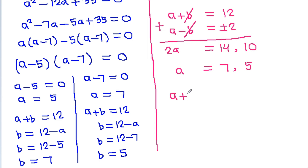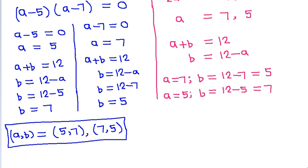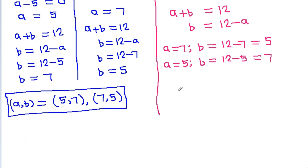We have a plus b equals 12, so b equals 12 minus a. If a is 7, then b equals 12 minus 7, which is 5. And if a is 5, then b equals 12 minus 5, which is 7. So (a, b) equals (7, 5) or (5, 7).